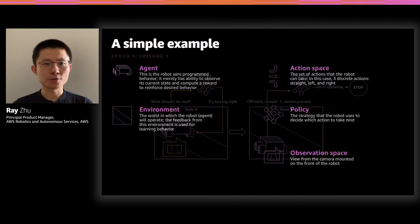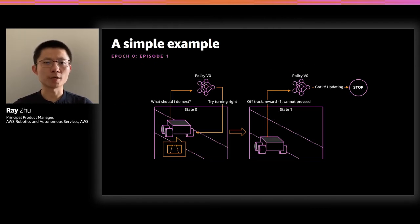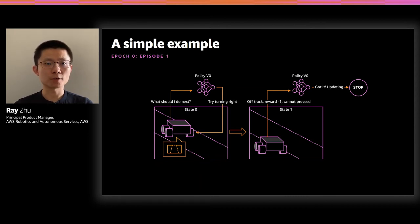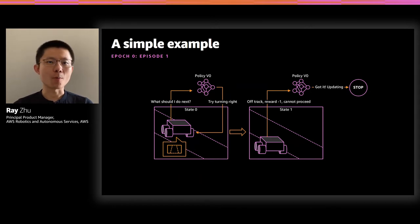There are two new concepts in the reinforcement learning training process. One is an episode — think of it as an interval of trial and error. It could be based on time or certain conditions. For example, if the car goes off the track, that episode concludes; then you reset back to the original state and do it again. Then there's an epoch — a group of episodes — typically mapped to a policy version. You keep different versions along the way so you can revert back if needed, or recover from failures. Epoch zero typically means policy version zero.